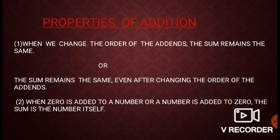When zero is added to a number or a number is added to zero, the sum is the number itself. This means 0 + 2 = 2 and 2 + 0 is also equal to 2.